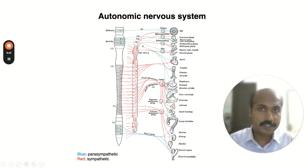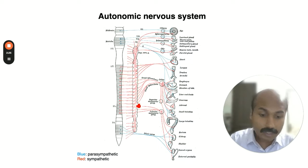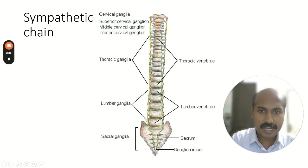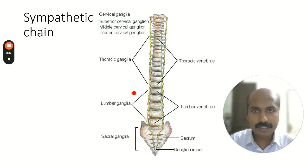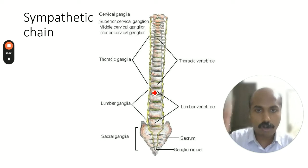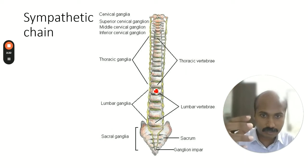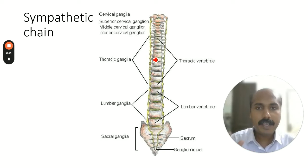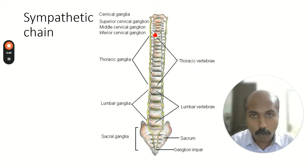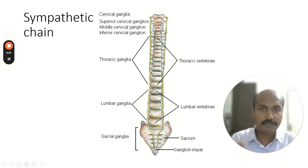What is the sympathetic chain anatomically? If you look at the anatomy here, you are seeing the vertebral column in the center. You can see the cervical vertebra, thoracic vertebra, lumbar vertebra, and sacrum.